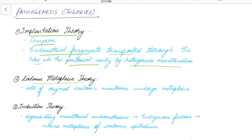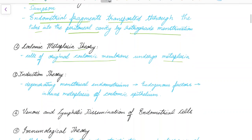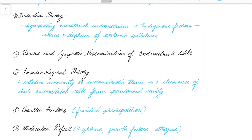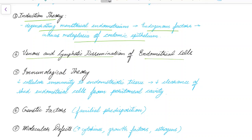The second is the coelomic metaplasia theory, where cells of the original coelomic membrane undergo metaplasia leading to endometriosis. In the induction theory, the degenerating menstrual endometrium releases endogenous factors which induce metaplasia of coelomic epithelium and cause endometriosis. Endometriosis can also be caused by venous and lymphatic dissemination of endometrial cells.